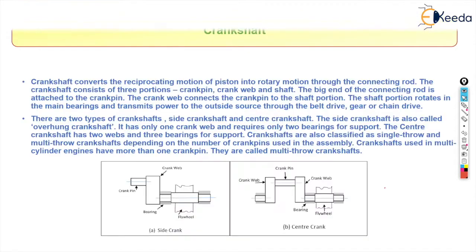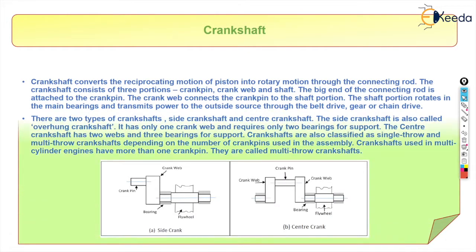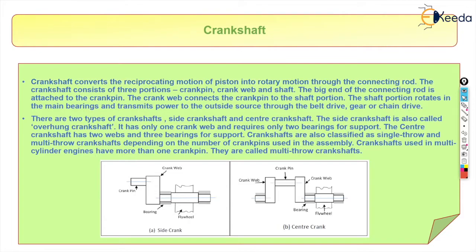The crankshaft converts the reciprocating motion of the piston into rotary motion through the connecting rod. The crankshaft consists of three portions: the crank pin, the crank web, and the shaft. The big end of the connecting rod is attached to the crank pin, and the crank web connects the crank pin to the shaft portion.